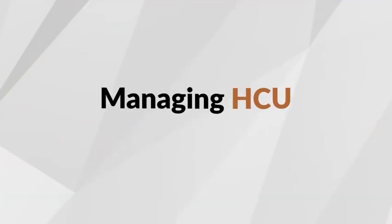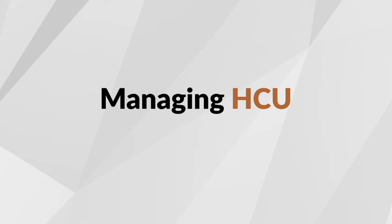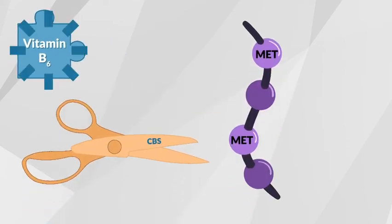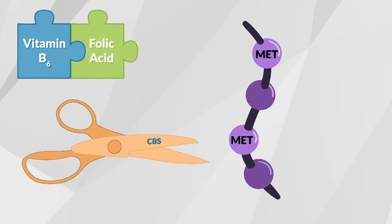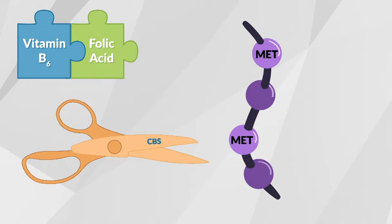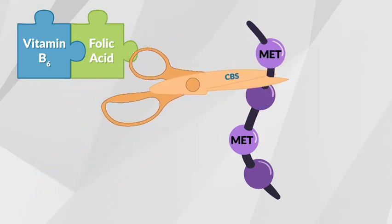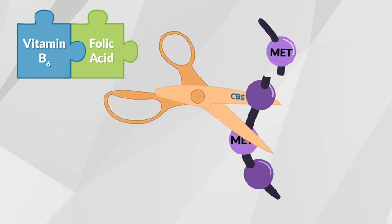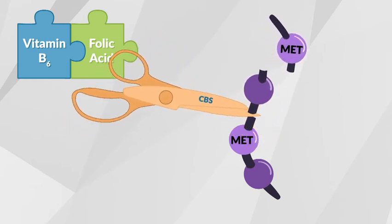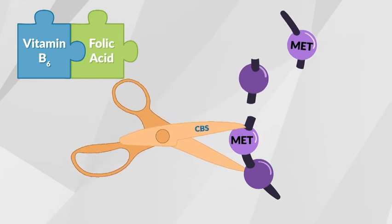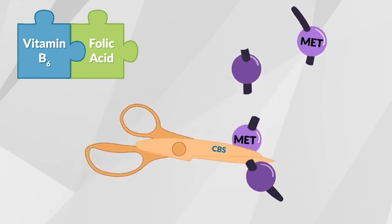In some individuals with HCU, the enzyme only requires the help of a vitamin called vitamin B6 or pyridoxine together with folic acid to work properly. The vitamin helps the enzyme work better and, if successful, is the only management needed. Roughly 50% of individuals with HCU are responsive or partially responsive to vitamin B6 management.